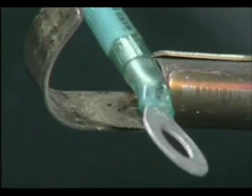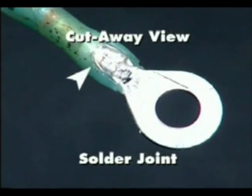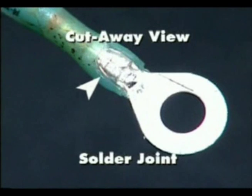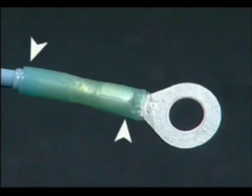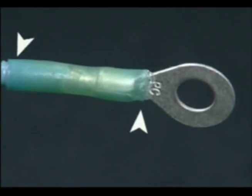When the solder begins to flow, remove the terminal from the heat. The solder should flow into the terminal barrel. Make sure the end is sealed and let the terminal cool.